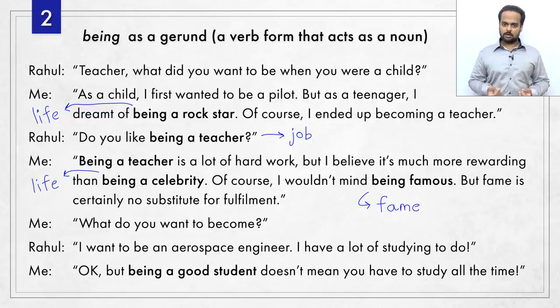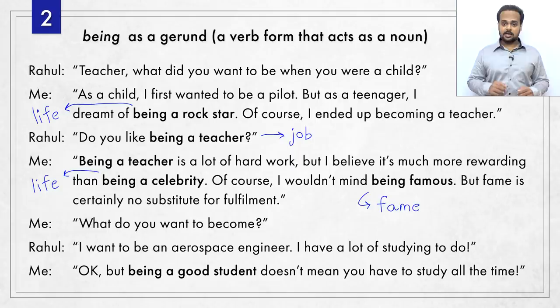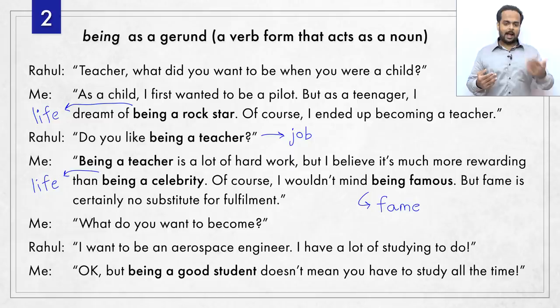Then I asked Rahul what he wanted to become. He said he wants to be an aerospace engineer and has a lot of studying to do. So I reminded him: being a good student doesn't mean you have to study all the time. It's good to get out in nature or go hang out with your friends once in a while. So that's the second use of being — as a gerund.